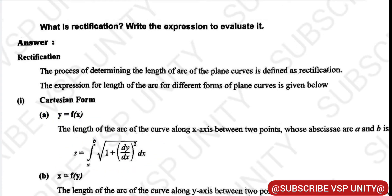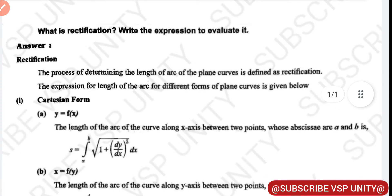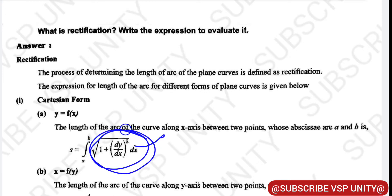The length of the arc of the curve along the x-axis, between two points whose abscissae are a and b, is given by: s is equal to integral from a to b of under root of 1 plus (dy/dx) squared, dx. This we have already covered up to here in the third unit, and by integrating we get the length of the arc of the curve.